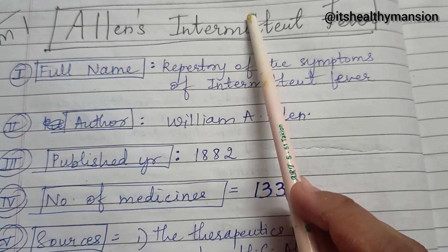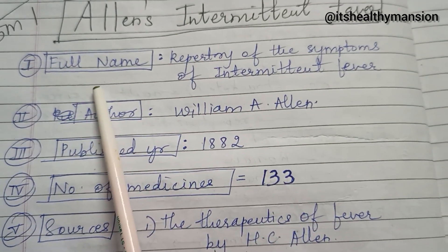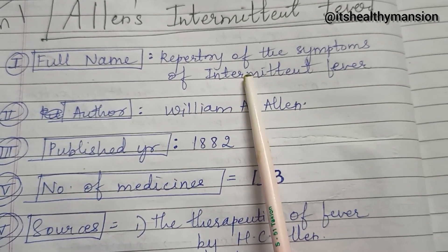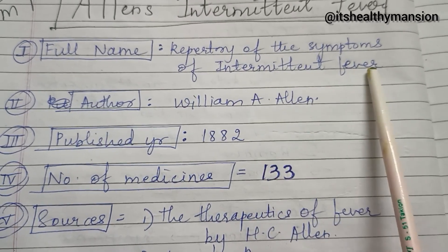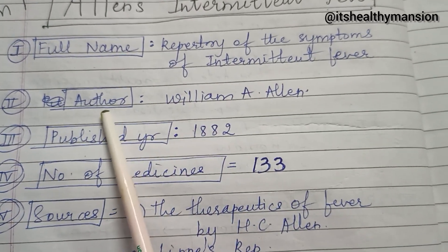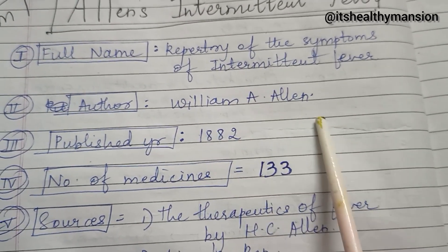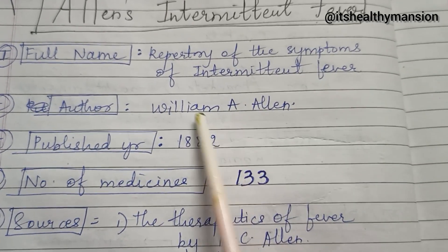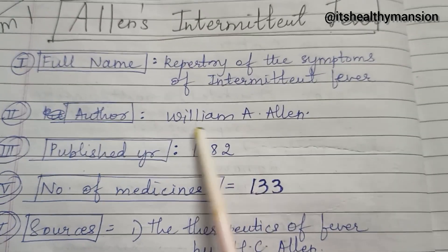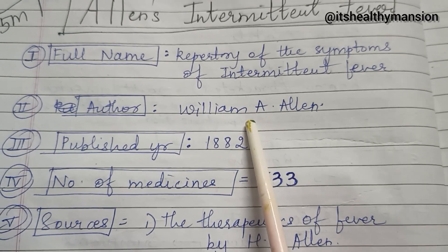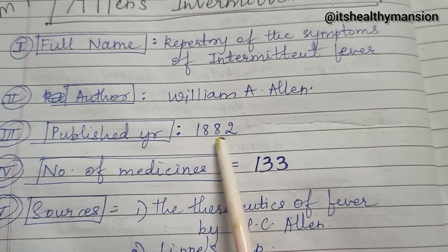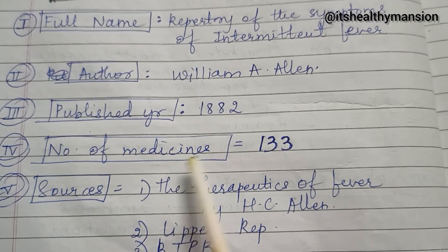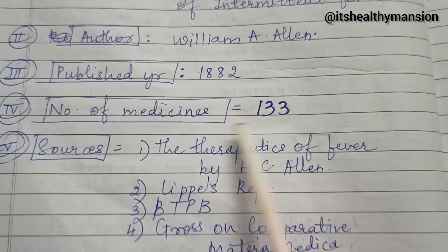Allen's Intermittent Fever — the full name of the repertory is Repertory of the Symptoms of Intermittent Fever. The author is William A. Allen. Many students make a mistake and write H.C. Allen, but this is William A. Allen. It was published in the year 1882, and the number of medicines in this repertory are 133.